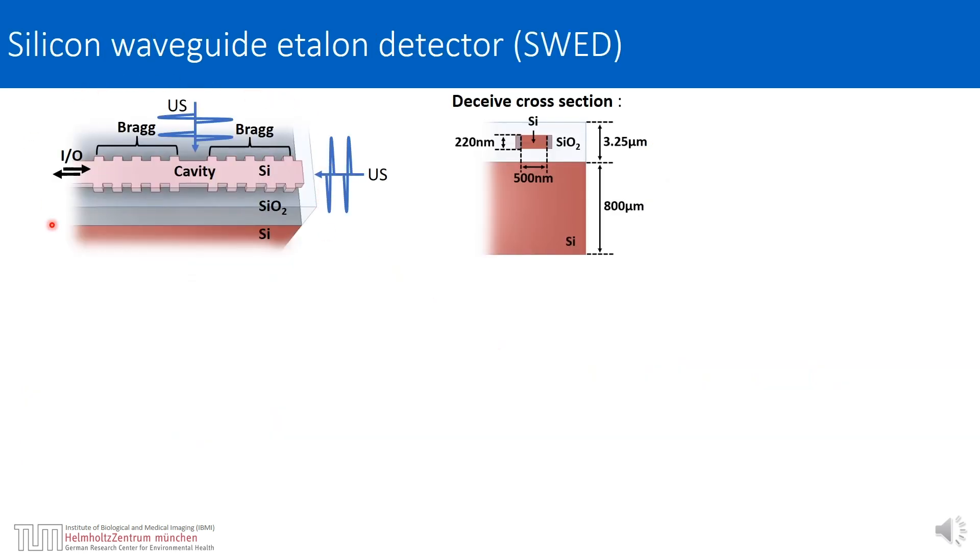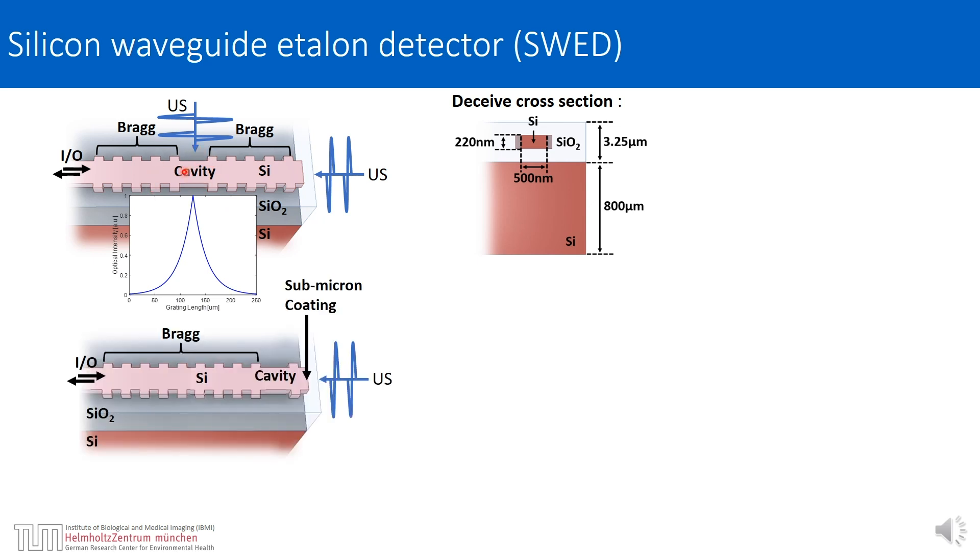As an example we can consider this silicon resonator constructed by bringing close together two distributed Bragg reflectors. Such resonators are commonly used as optical notch filters, and of course the optical field will be concentrated around the cavity's center. In order to realize the full sensitivity potential of this resonator, we modified this design by substituting one of the Bragg reflectors with a thin metallic layer. In this case the optical field inside the cavity has a much larger overlap with the ultrasonic field, which improves sensitivity.